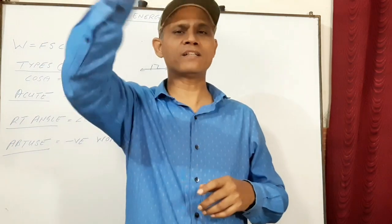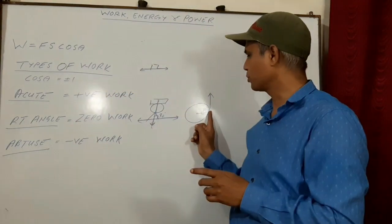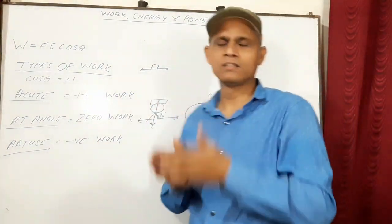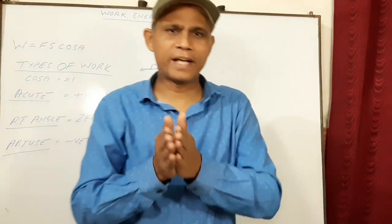Second example is when you rotate the body in a circular path, in that case also work done is 0 because the centripetal force acts toward the center and the displacement is tangent to the circle. Hence the angle is 90 degrees, therefore the work done is 0.